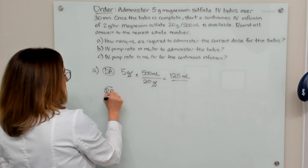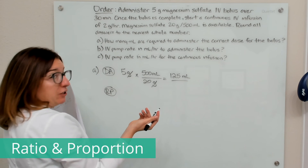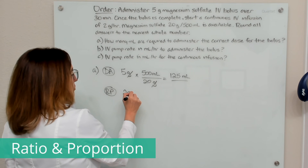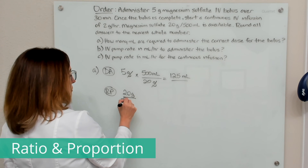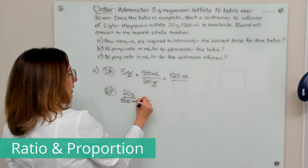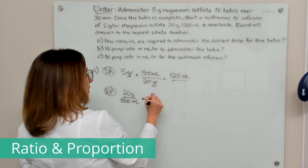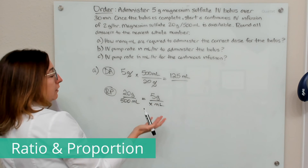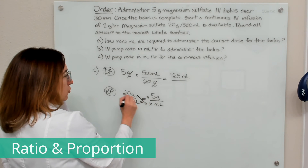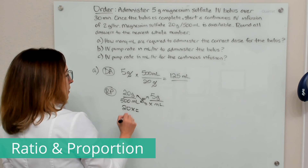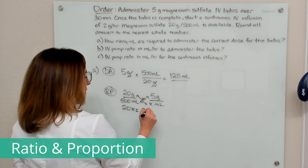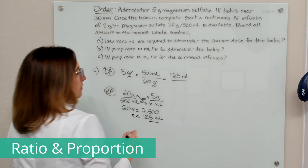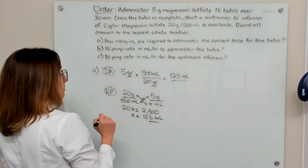We can also solve part A with ratio and proportion. On one side of the equation, we put our known ratio, which is our available concentration — 20 grams in 500 mL. On the other side, we put our ordered dose of five grams and an X for the mL, because that's what we're looking for. We cross multiply: 20 times X equals 500 times 5, which is 2500. Solving for X, we get 125 — the same answer we got with dimensional analysis.